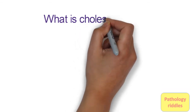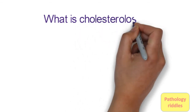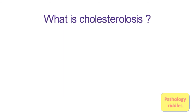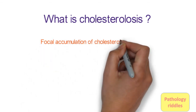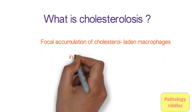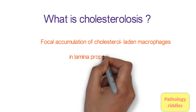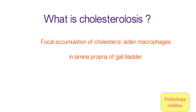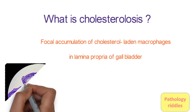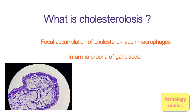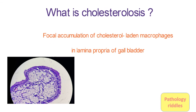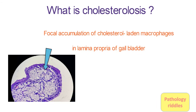Eighth question: What is cholesterolosis? Cholesterolosis is focal accumulation of cholesterol-laden macrophages in the lamina propria of the gallbladder. In a case of cholesterolosis, you can see cholesterol-laden macrophages just under the epithelium, which area is called the sub-epithelium.